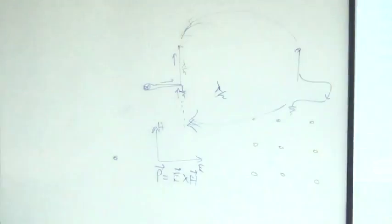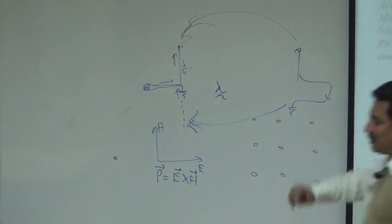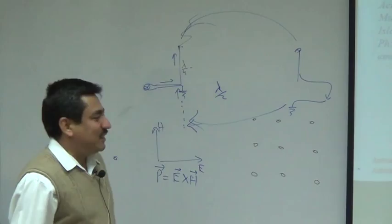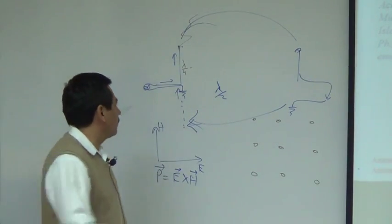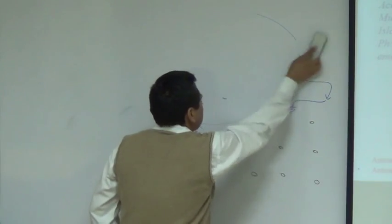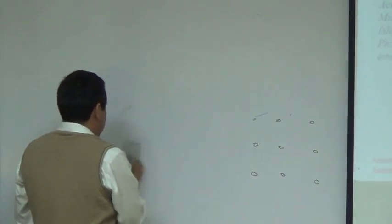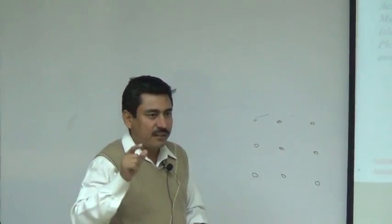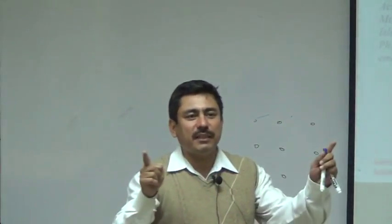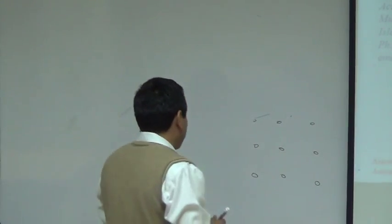We will talk about antennas and basic concepts. This is a single antenna, which we can assume to be omni-directional. Omni-directional means that if the signal is transmitted in all directions in the azimuth, then it would be an omni-directional antenna.